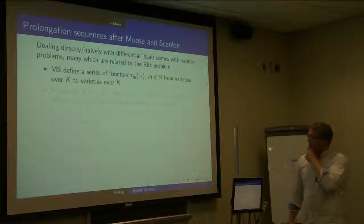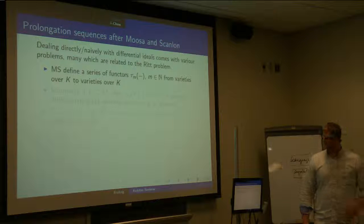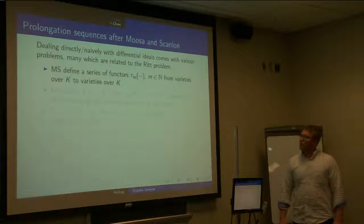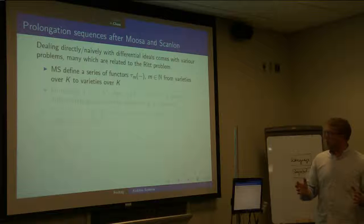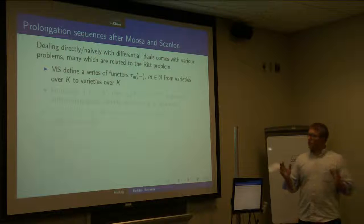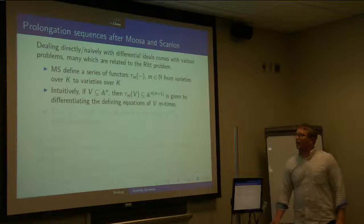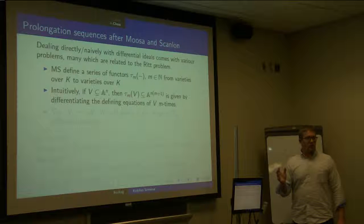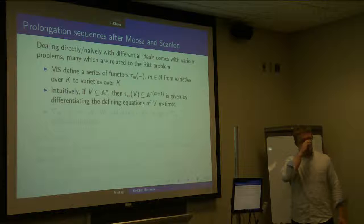The approach that we took follows some work of Moosa and Scanlon. I've spoken about this before: a series of functors tau_m from algebraic varieties to algebraic varieties over k. Roughly, what tau does is take the equations for a given variety and differentiate them in the differential polynomial ring m times, then look at the resulting equations.